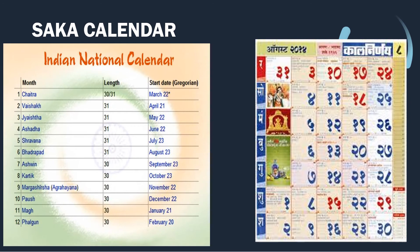The Saka calendar is the Indian National calendar and is used alongside the Gregorian calendar by the Gazette of India, in news broadcasts by All India Radio, and in calendars and communications issued by the Government of India. It is a Hindu calendar.